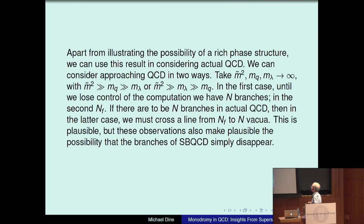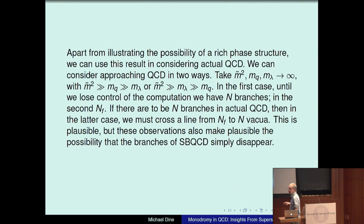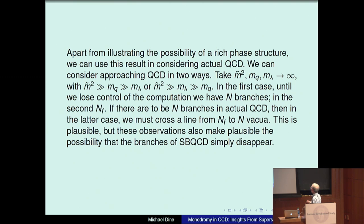Apart from illustrating the possibility of a rich phase structure, we can use this result in considering actual QCD. We can consider approaching QCD in various ways, but taking m-tilde squared much greater than mq much greater than lambda, or m-tilde squared much greater than m_lambda much less than mq, we have two sorts of behaviors as we head to real QCD — in one case N branches, in the other case N_F. If we're to find N branches in real QCD, that would require rather complicated behavior, but these observations also make it plausible that the N branches simply disappear.